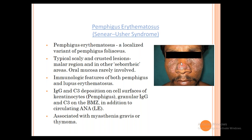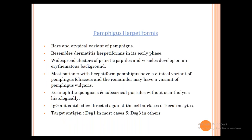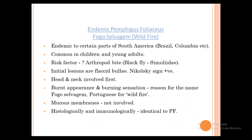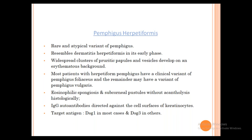Pemphigus Herpetiformis: an atypical variant that resembles Dermatitis Herpetiformis in its early phase. Presents with grouped, widespread pruritic papules and vesicles on an erythematous background. Most patients have a clinical variant of Pemphigus Foliaceus; the remainder have Pemphigus Vulgaris. Biopsy shows eosinophils in the epidermis and subcorneal pustules without acantholysis histologically. IgG antibodies may be present.